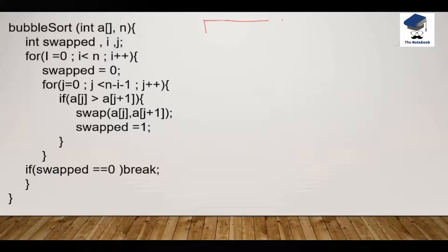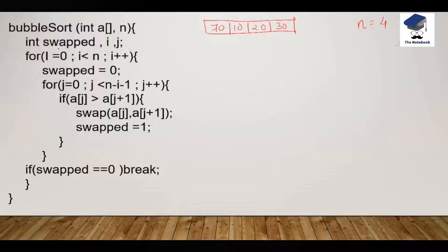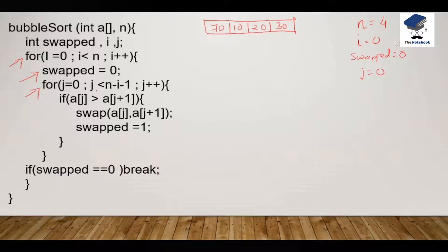Let's consider this example. We have an array with elements 70, 10, 20, and 30. The size of the array, n, is equal to 4. We come to the first for loop where the value of i starts from 0 and the first for loop will run till i is less than n, that is 4. We check: 0 is less than 4 — yes. We come under the first for loop and we will make the value of swap as 0. Now the second for loop starts with j equals 0 and it will run till j is less than n minus i minus 1, which is 4 minus 0 minus 1, giving j less than 3.